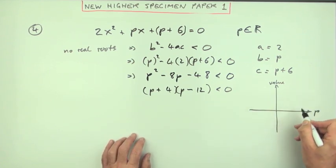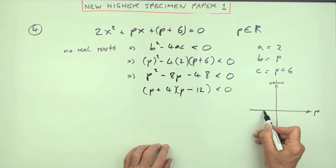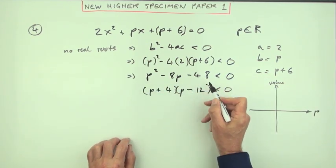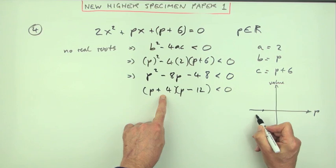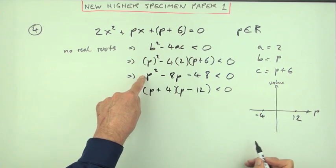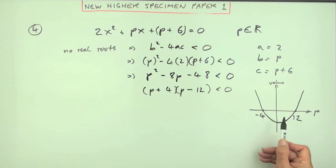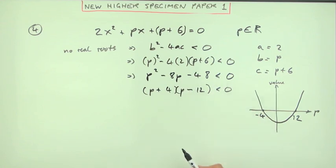The only way to get this correct is by considering the picture of the answers. You only factorized it to find where this cuts. It cuts at -4, cuts at 12, and the positive p² says this graph looks like this upward parabola.